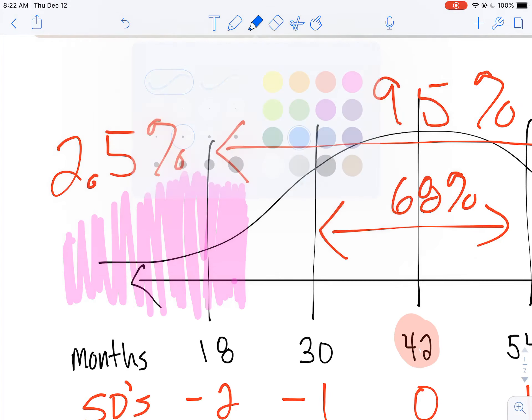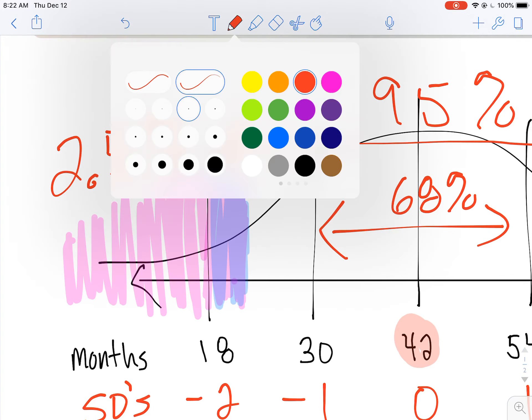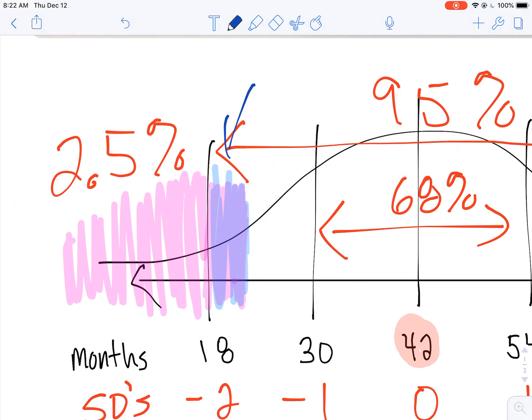And maybe I'll do that in a different color. Yeah, I'll do that in bluish. There we go. So this represents the additional 5% that they're going to extend that warranty to.